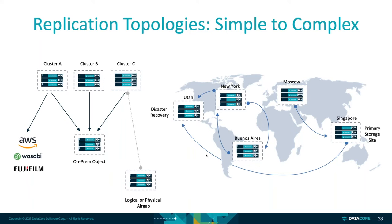On the left-hand side, we have three clusters — A, B, and C — all replicating data to on-prem object storage, the mothership or central office. But cluster A also has the added requirement to push data out to a cloud service provider S3 endpoint such as Wasabi or AWS, or perhaps a tape endpoint with an S3 interface such as Fujifilm. You can set it up that way and have them all run simultaneously once those feeds are defined, replicating data automatically to the designated targets.